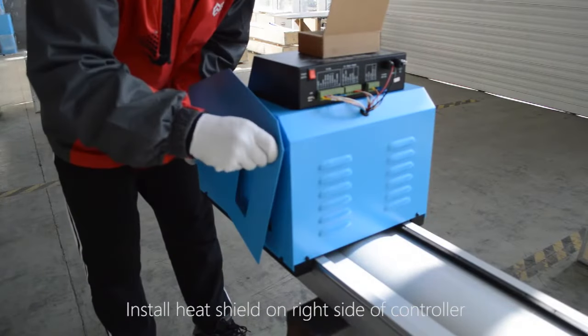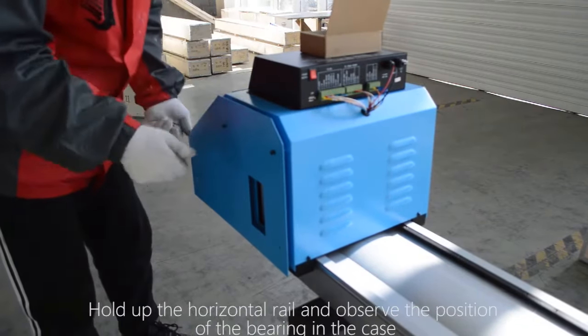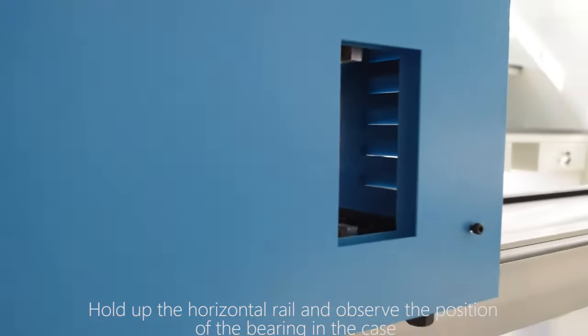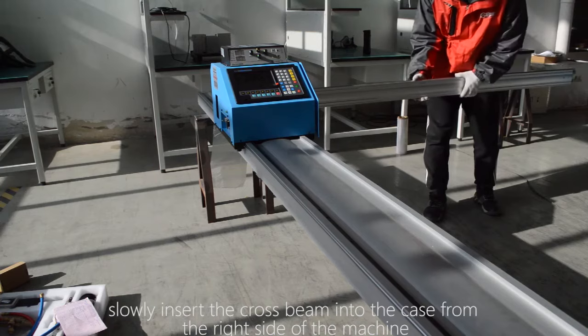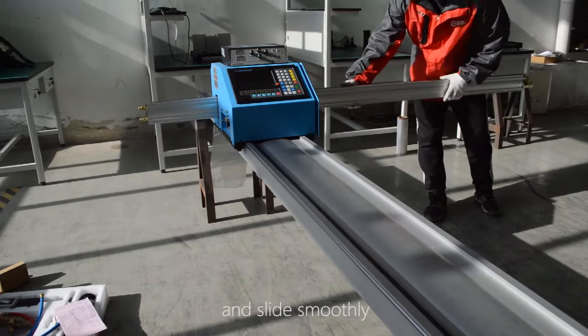Install heat shield on right side of controller. Hold up the horizontal rail and observe the position of the bearing in the case. Slowly insert the cross beam into the case from the right side of the machine and slide smoothly.